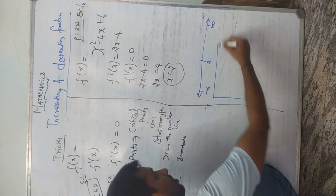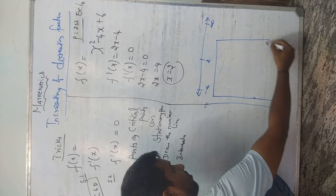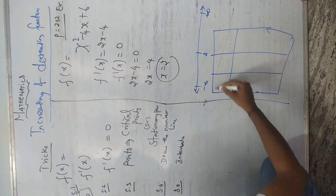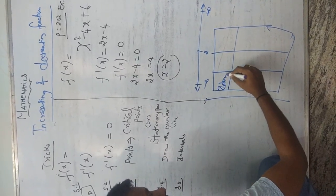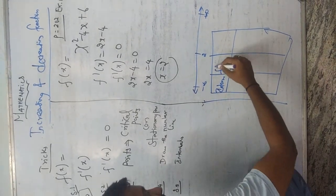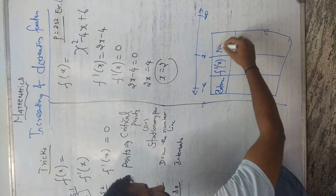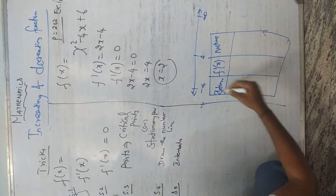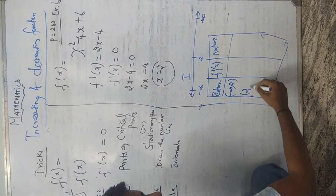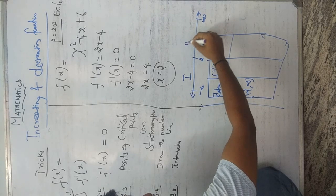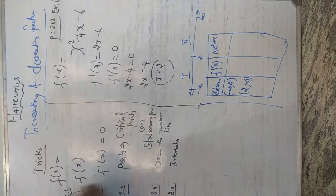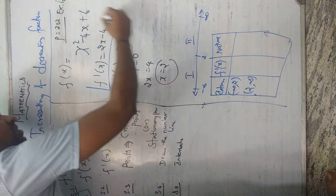Step 4: draw the number line from minus infinity to plus infinity, and put the point 2 on it. Step 5: divide into intervals. For this number line there are two intervals. I will put a tabular column consisting of three columns: the first one is intervals, the second one is f'(x), and the third one is nature.